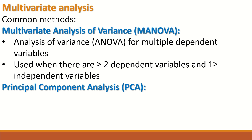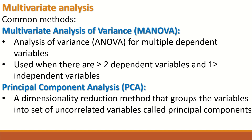Another type of multivariate analysis is principal component analysis, abbreviated as PCA. PCA is a dimensionality reduction method that groups multiple variables into a set of uncorrelated, unrelated variables called principal components. The objective of performing PCA is to take multiple variables, reduce and group them into principal components, which leads to a reduction in the overall number of variables.